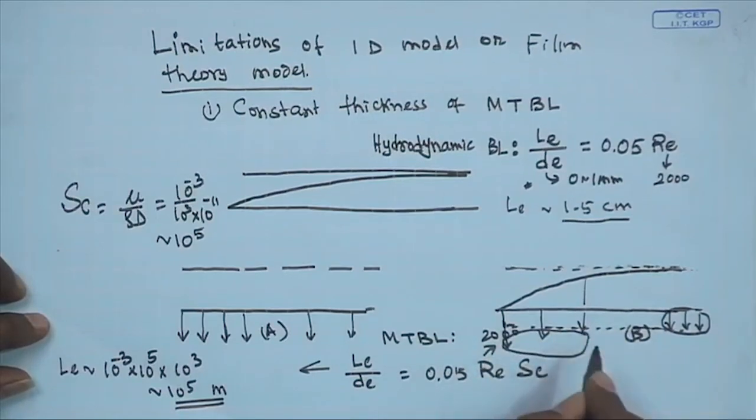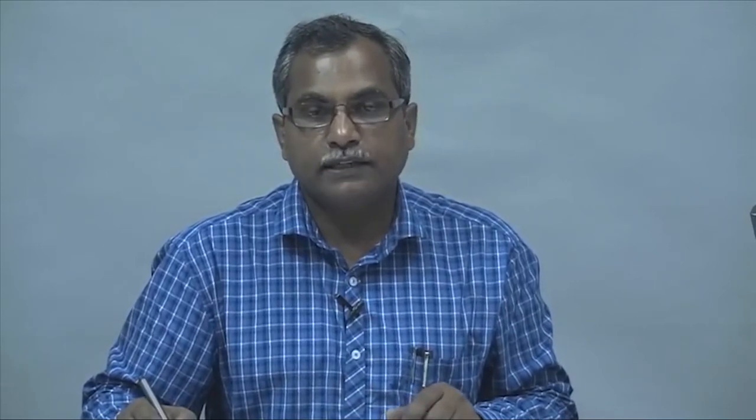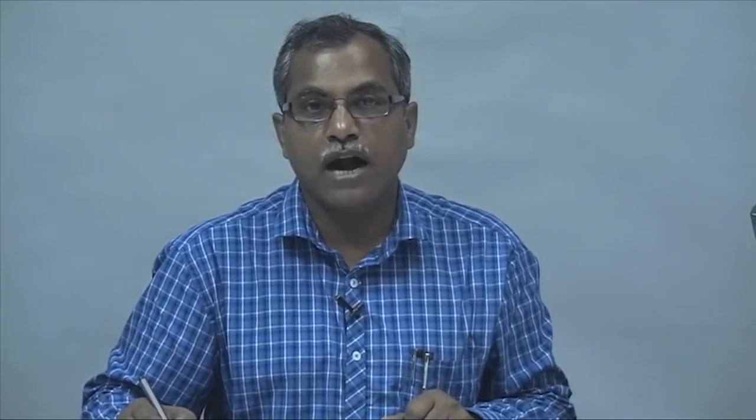If one assumes a constant thickness of the mass transfer boundary layer over the membrane surface, a constant permeate flux is assumed everywhere. This means the excess flux due to the developing mass transfer boundary layer is overlooked. Therefore, the film theory assumption leads to under-prediction of the permeate flux — whatever flux is calculated will always be less than in the actual scenario.